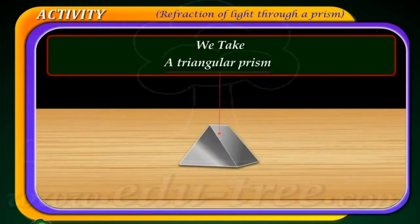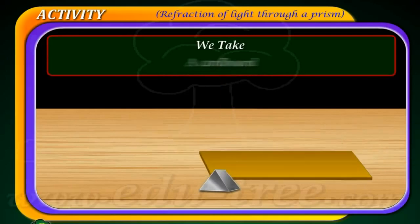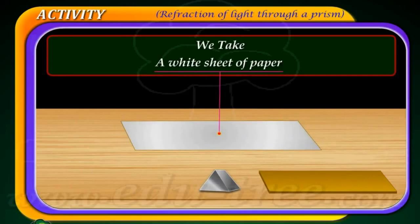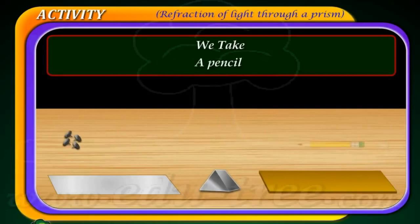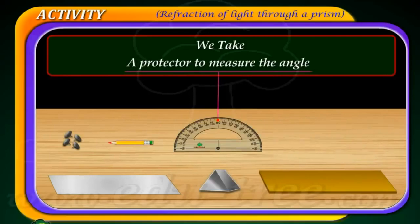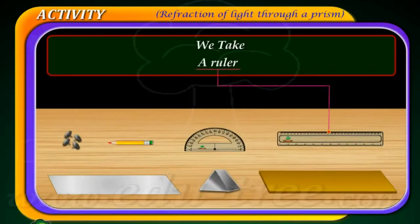For this activity, we need to take a triangular prism, cardboard, a white sheet of paper, a few thumbtack pins, a pencil, a protractor to measure the angles, and a ruler to draw the lines.